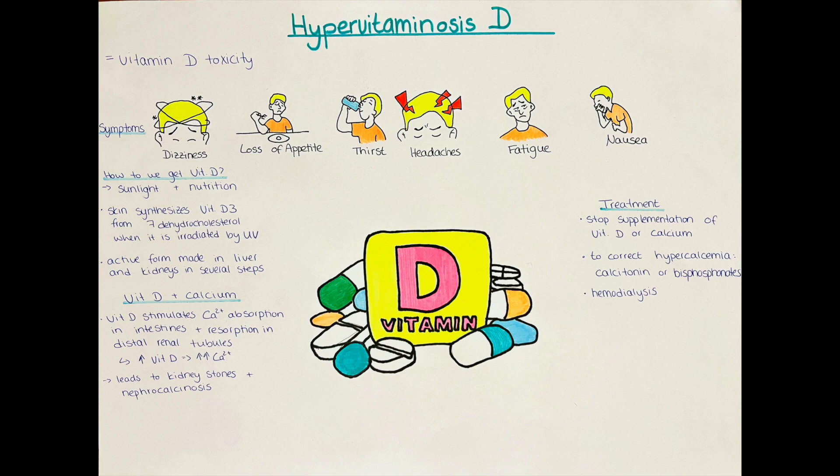Hello and welcome to this channel. My name is Jesper and in this video I'm going to talk about hypervitaminosis D, which is also known as vitamin D toxicity. Basically it's when you have too much vitamin D in your body. This is a condition that develops when the body receives too high doses of vitamin D. To understand the negative effects and symptoms, let's quickly summarize how vitamin D works in our body.